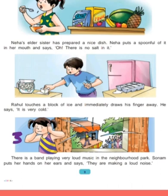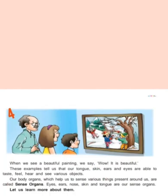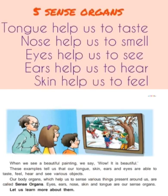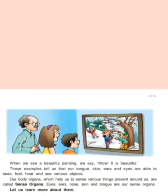Now see the third example. Sonam is putting her hands on her ears. Why? Because the neighbour's band is making a loud noise. Which sense organ did she use? She used her ears to hear the noise. Now see the fourth example: some people are seeing a painting, and the painting is beautiful. Which sense organ did they use? Eyes. So by studying these examples, we can tell that our tongue, skin, ears, and eyes are able to taste, feel, hear, and see various objects. Our body organs help us to sense various things present around us, and they are called sense organs.